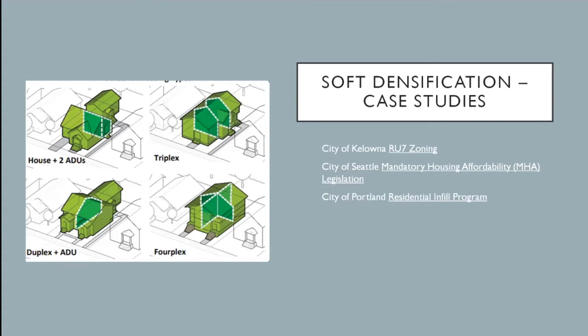Housing forms in the RU7 zone can range from three or four small side-by-side detached units with private outdoor space to a single building with four units arranged side by side or back to back. The second case study was Seattle, Washington, and their Mandatory Housing Affordability program — part of a larger initiative to mandate affordable housing — which increased density on single-family lots, with about 10% of neighborhoods upzoned for larger plexes or small apartment buildings.